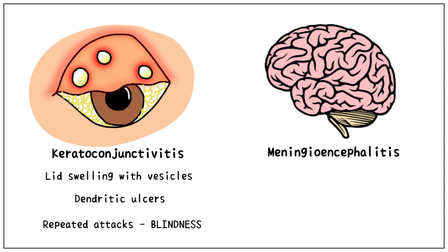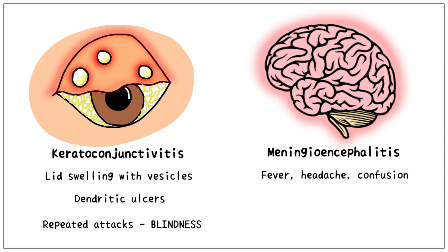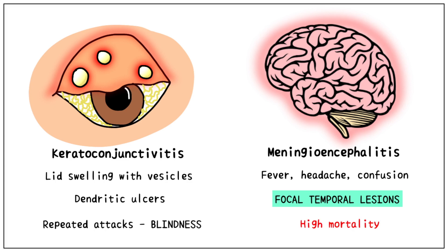Another form of herpes infection is meningoencephalitis. This occurs when the virus is attempting to travel down the nerve and eventually gets to the brain. It causes fever, headache, and confusion, and is characterized by focal temporal lesions on scans. Remember, if this is mentioned in a question, they are giving you a hint pointing right at herpes. This condition has a very high mortality rate if left untreated, but with the administration of acyclovir, the mortality has greatly reduced.